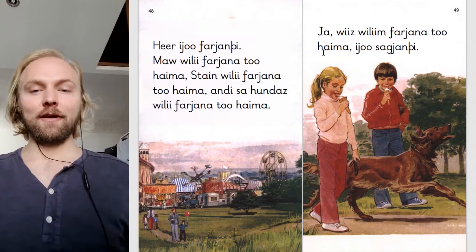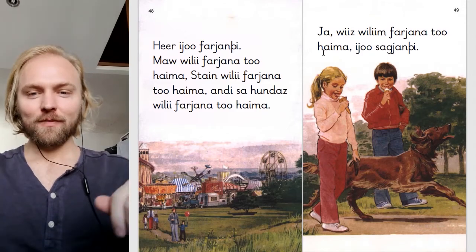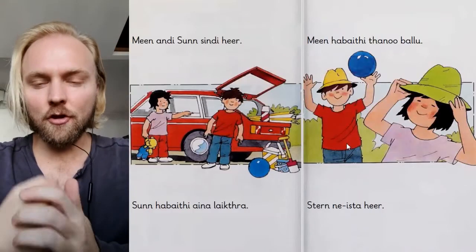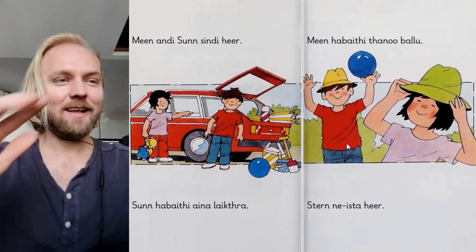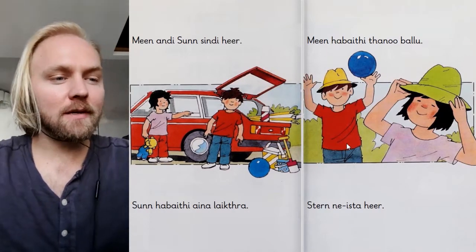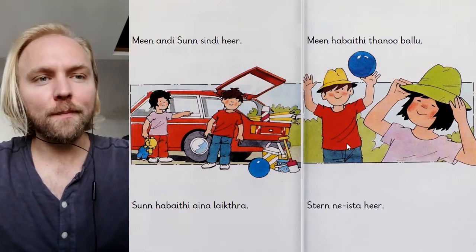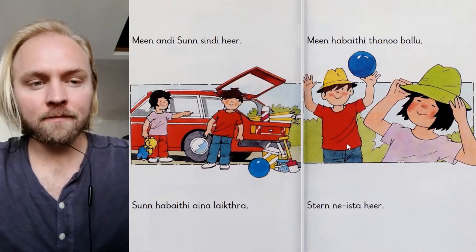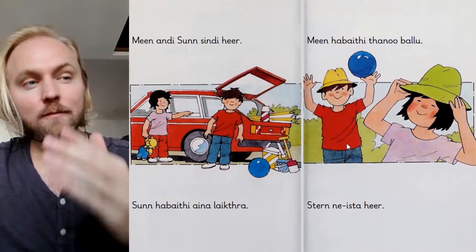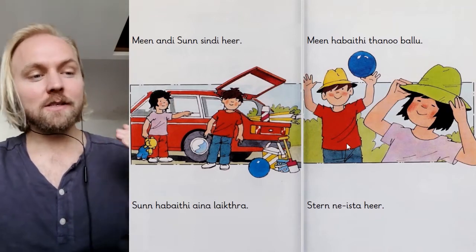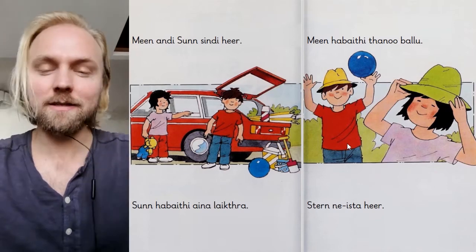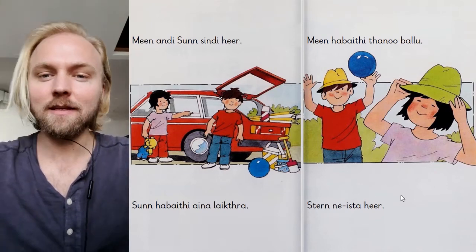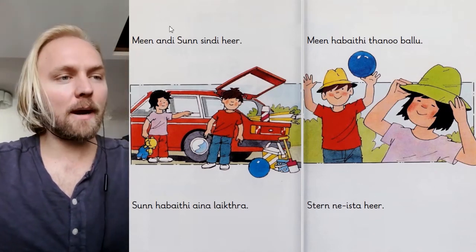Okay, take a breather and we're back. Let's continue — book two! Moon and sun are here. Sun has a toy, moon has the ball. Star is not here — 'nice that' means 'not here.'